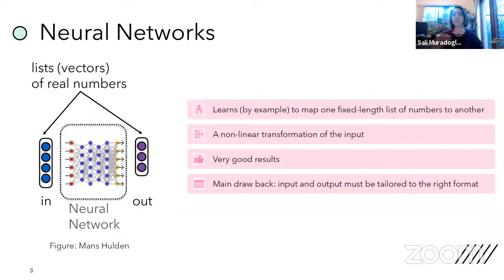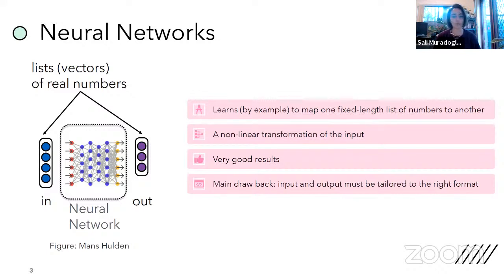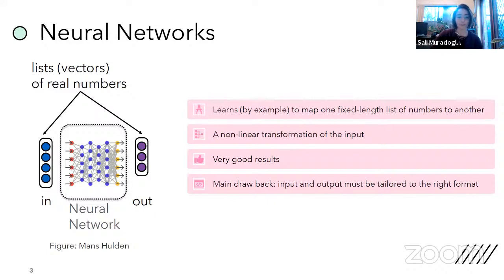I'm sure a lot of you already know neural networks have taken the linguistics and computational linguistics scene by storm. In a sense, we're basically mapping one vector to another — it's a nonlinear transformation of the input. There are a lot of examples of very good results, which is why it's such a big thing. The main drawback is that we need to tailor things and wrangle the data into the right format to be able to actually utilize these tools.